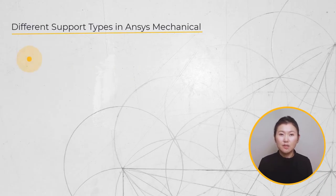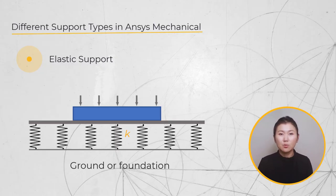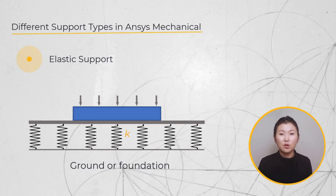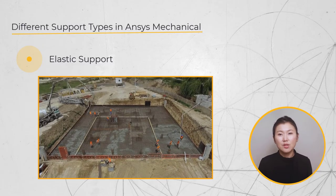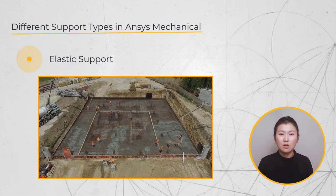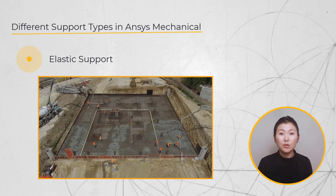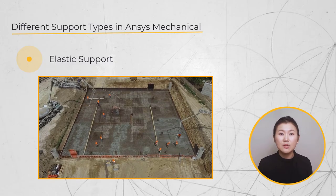After the compression-only support, let us talk about the elastic support. This support is useful to model parts that are not rigid — you can define a stiffness in the direction normal to the surface, such as a structure connected to a ground or foundation. When applied to a surface, the surface is free to slide in the tangential direction. A practical example is a building's foundation resting on soil, where the stiffness of the soil may be represented by an elastic support. The tangential stiffness is neglected.